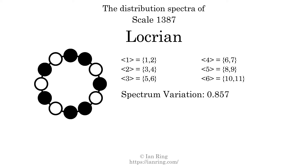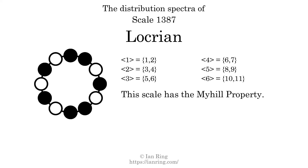Since the variation is greater than 0, this indicates that the scale is not perfectly even. The highest spectrum width is 1. Since this is less than or equal to 1, that means this scale is maximally even. If every spectrum has exactly 2 specific intervals, we call that the Myhill property. All of these spectra have exactly 2 sizes, so this scale has the Myhill property. Since the generic interval ranges do not overlap, this scale is proper. But it is not strictly proper because some specific intervals appear in more than one spectrum.